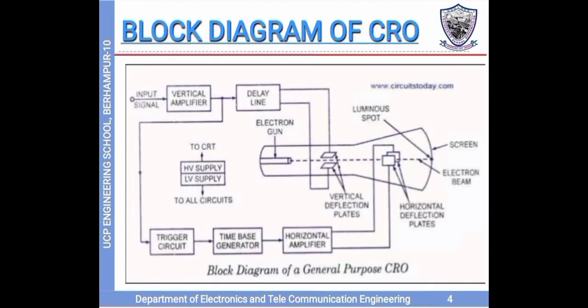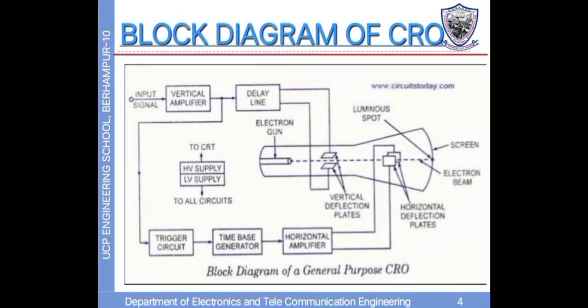Block diagram of CRO. It contains 5 blocks: vertical amplifier, delay line, trigger circuit, time-based generator, horizontal amplifier, and a cathode ray tube. The first block is the vertical amplifier. The input signal to be displayed on CRO is applied to the vertical amplifier. This amplifier amplifies the weak signal and it decides the sensitivity and bandwidth of the CRO.